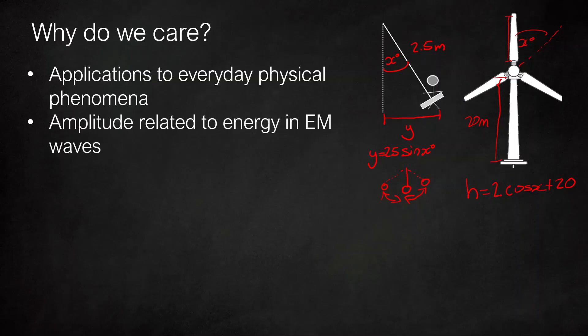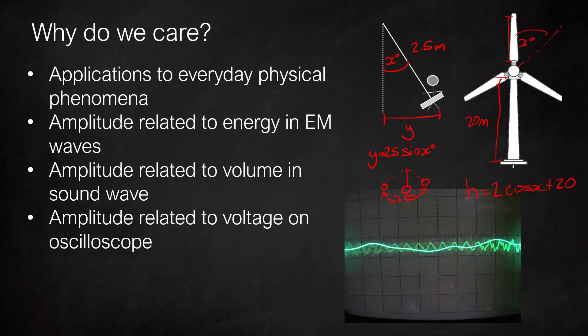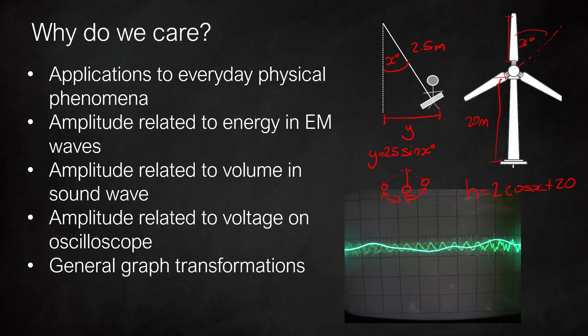Beyond that, the amplitude of an electromagnetic wave such as light is related to its energy. The amplitude of a sound wave is related to its volume, and the amplitude is related to voltage on an oscilloscope. You'll also be covering general graph transformations next year, such as y equals x squared going to 2x squared minus 4, and we also get general graphs such as a function f(x) transforming to more complex forms.